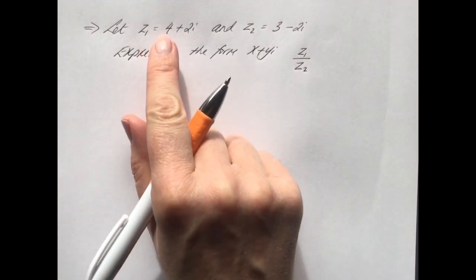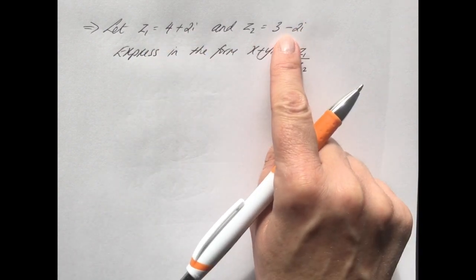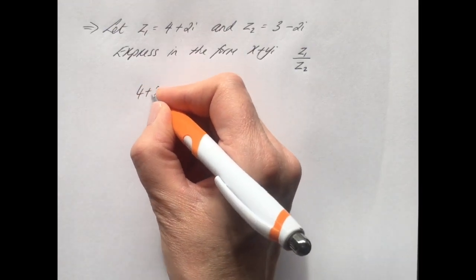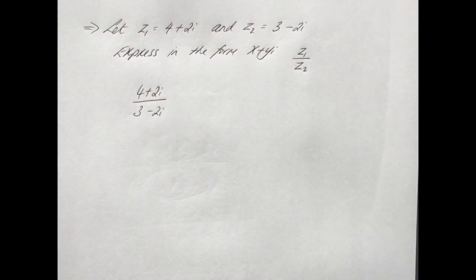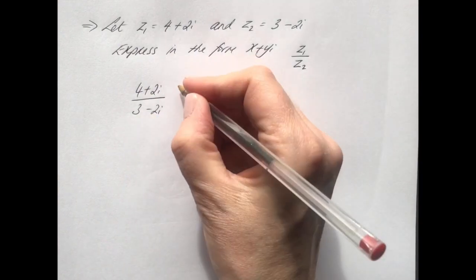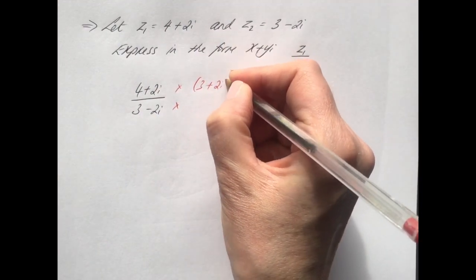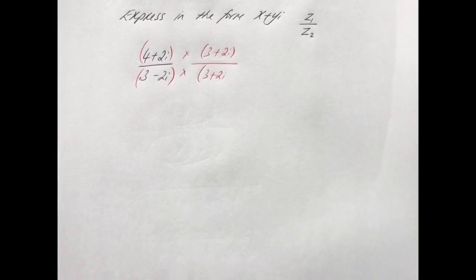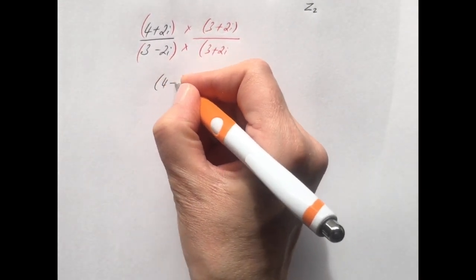Let's try another question asked in a slightly different way. Let z1 equals 4 plus 2i and z2 equals 3 minus 2i, and we want to find z1 divided by z2. Again you have division, so apply the division method. Pause the video here. We write 4 plus 2i over 3 minus 2i and multiply top and bottom by the conjugate of the denominator, which is 3 plus 2i.